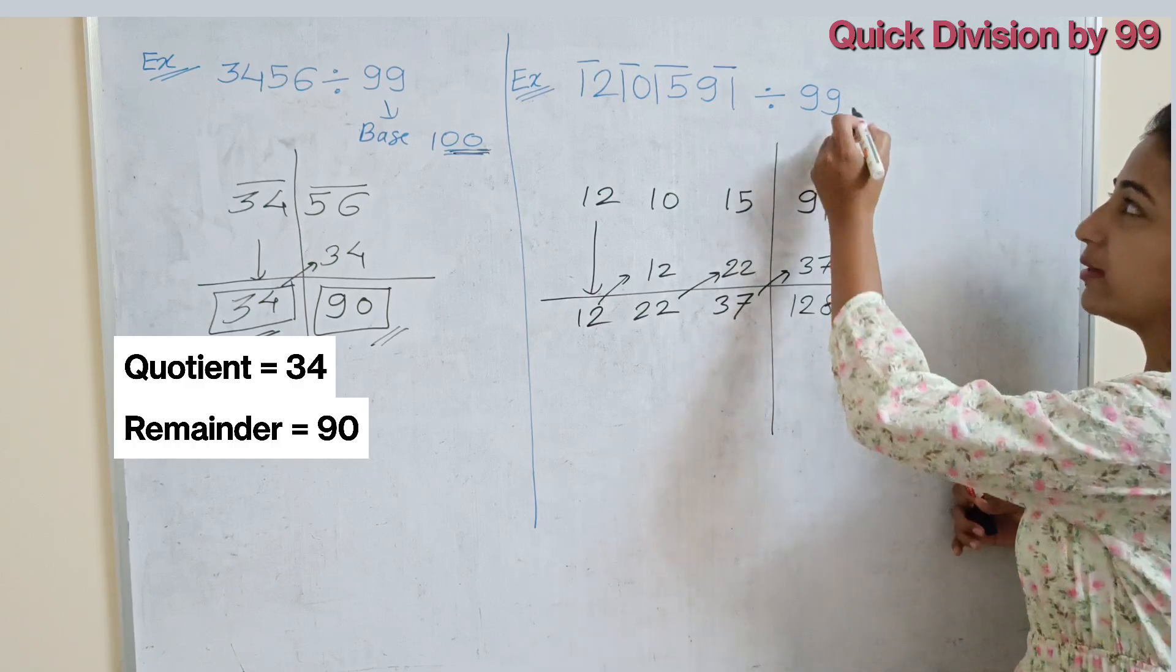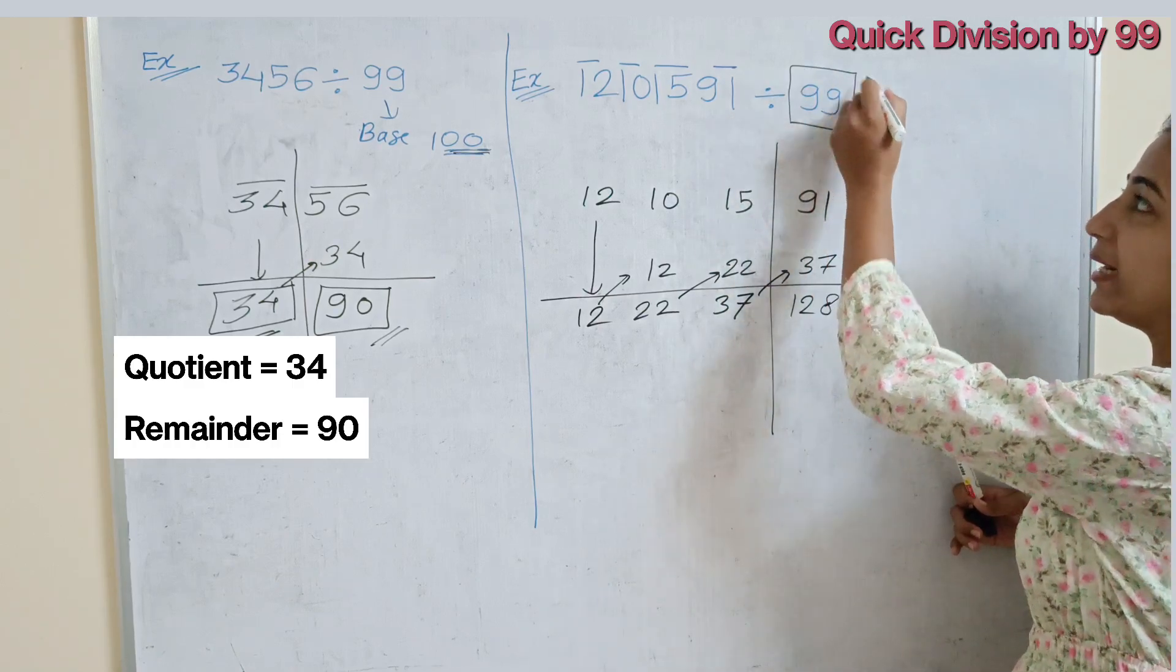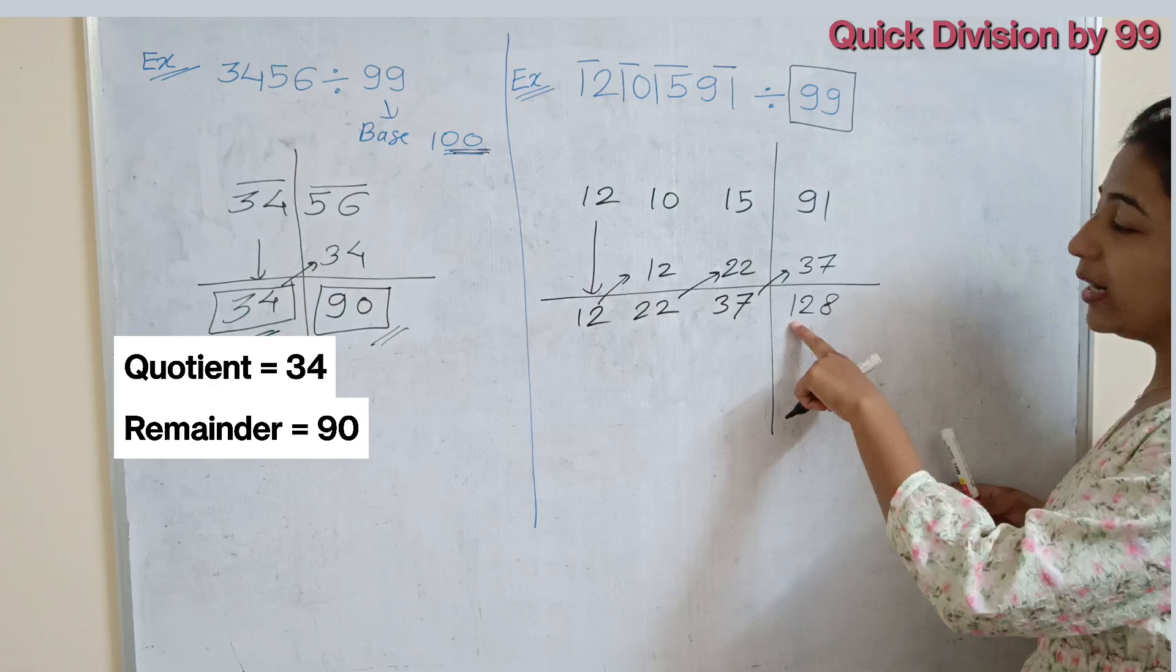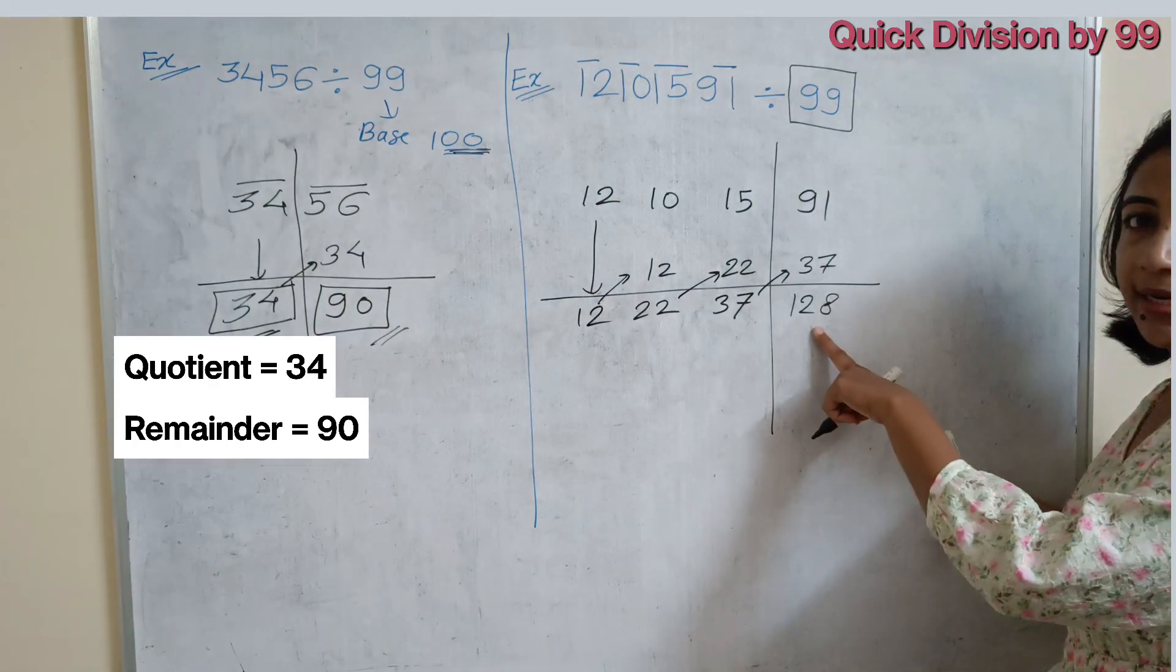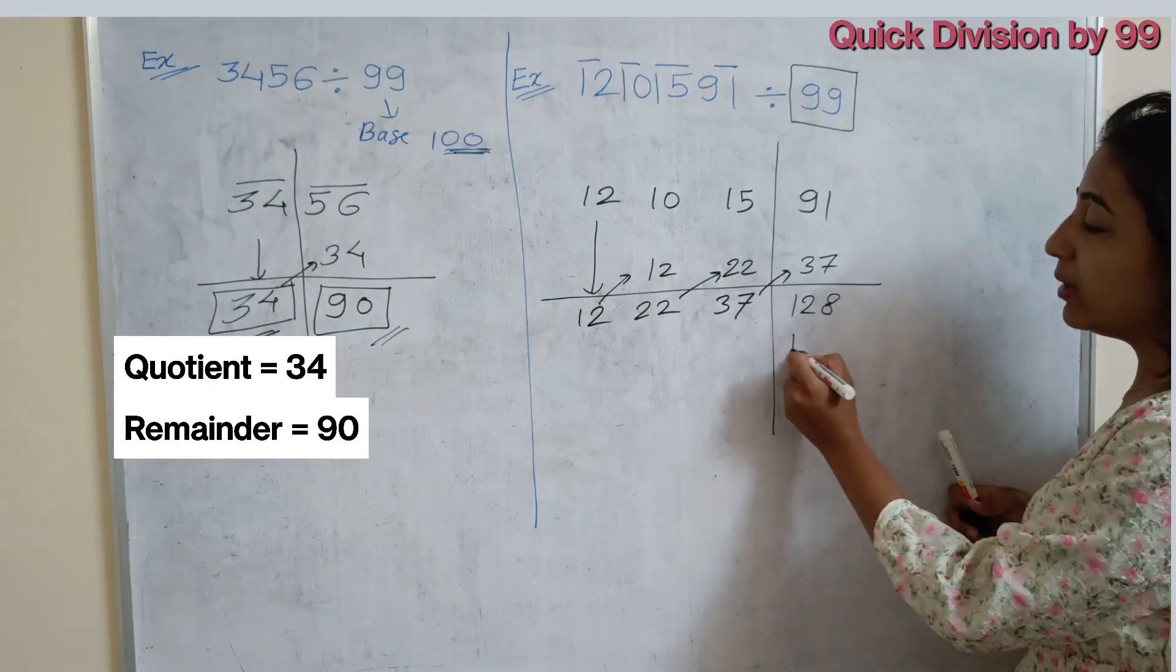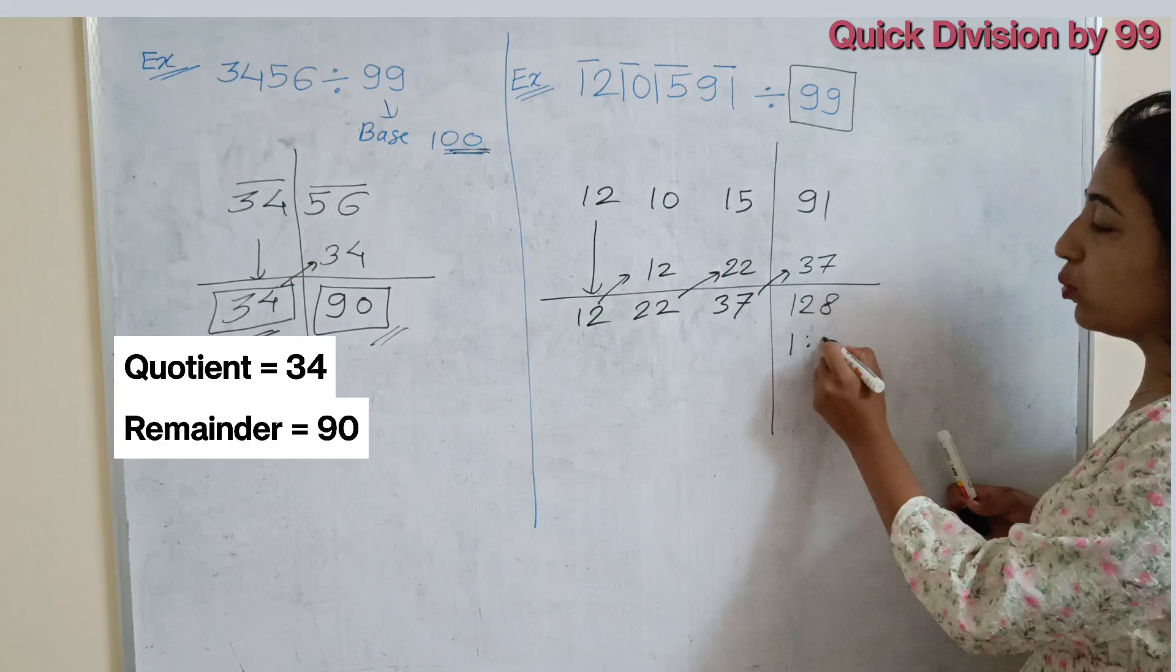But because we are dividing this number by 99, so 128 is greater than 99. That means, this number we have to again break in two parts.